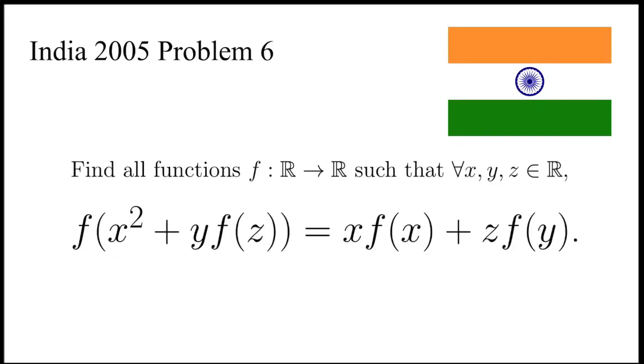Let's take a look at this problem taken from the Indian National Mathematical Olympiad 2005. It says, find all functions f that maps the set of real numbers to itself, such that for all real numbers x, y, and z, f of x squared plus y times f of z equals x times f of x plus z times f of y.